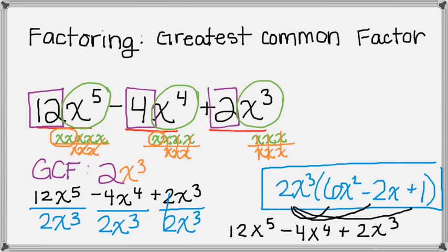And the reason is with factoring, we're not changing the expression. We're actually just rewriting it in factored form. So our final answer for this is 2x cubed and then in parentheses times 6x squared minus 2x plus 1.